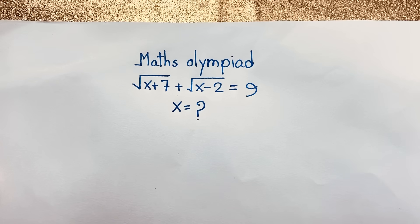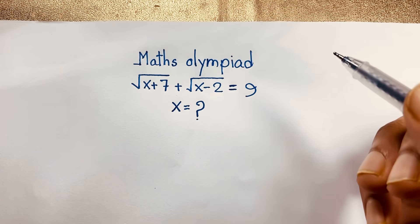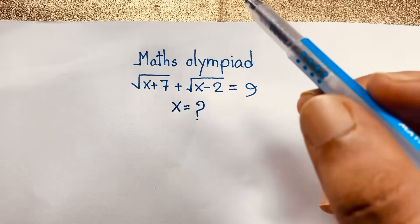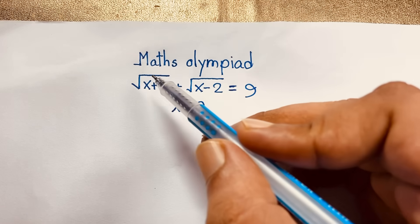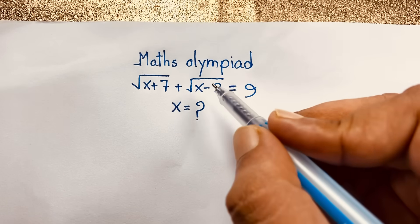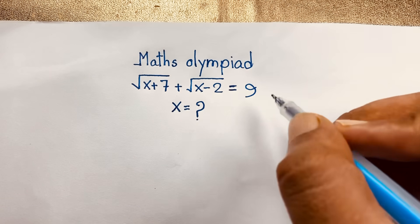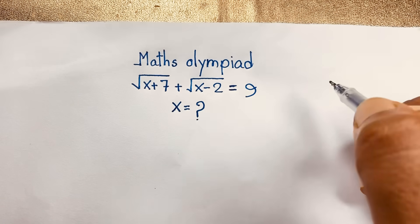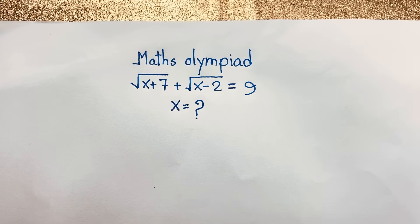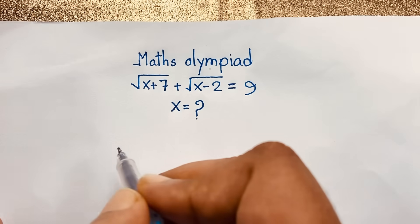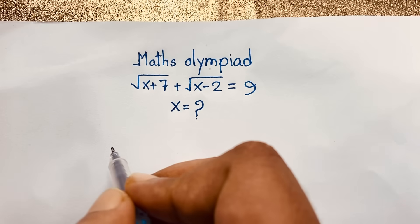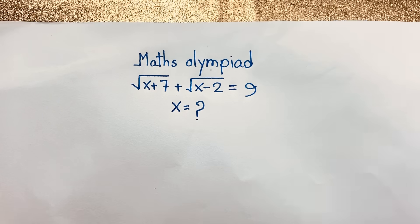Hello everyone, welcome to Rasha's classroom. Today we have solved an interesting radical math question, which is square root of (x plus 7) plus square root of (x minus 2) is equal to 9 — x is equal to what? How to solve this interesting math question? I will solve this using an easy method.